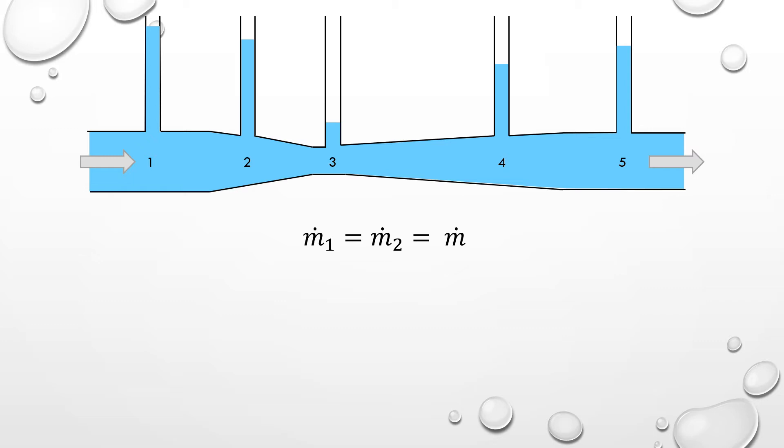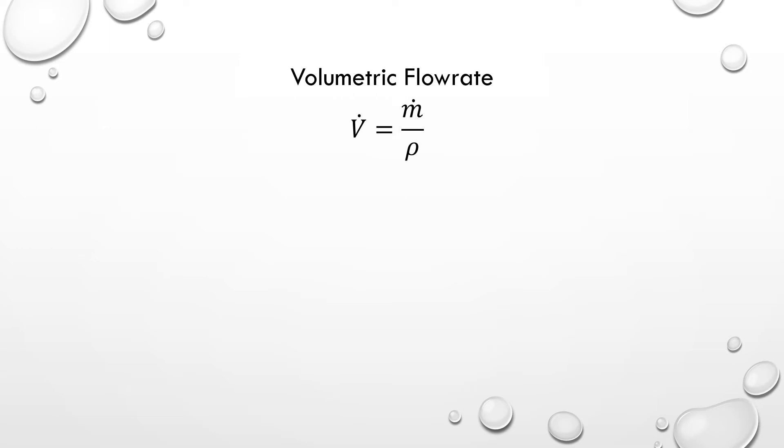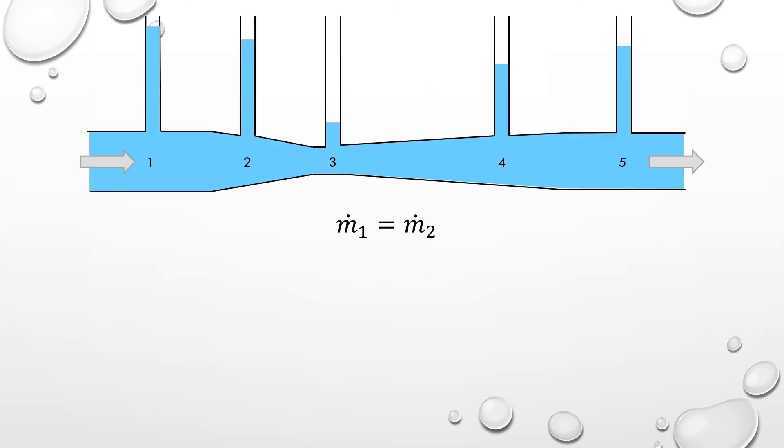Next, let's determine how to relate the mass flow rate to the fluid velocity. For an incompressible fluid, or a fluid whose density is not a function of pressure, such as water, we can easily relate the mass flow rate to the volumetric flow rate by simply dividing the mass flow rate by the density. From this relationship, we can also see that the volumetric flow rate of an incompressible fluid must be constant through the venturi.